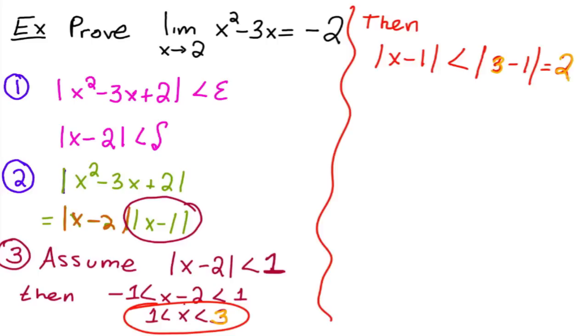Okay, so if x minus 1 is less than 2 by this assumption, then what that means is that x minus 2 times x minus 1 is less than 2 times x minus 2. So just a straight substitution of instead of absolute value of x minus 1, well, that's less than 2. So just make it less than 2 times x minus 2.